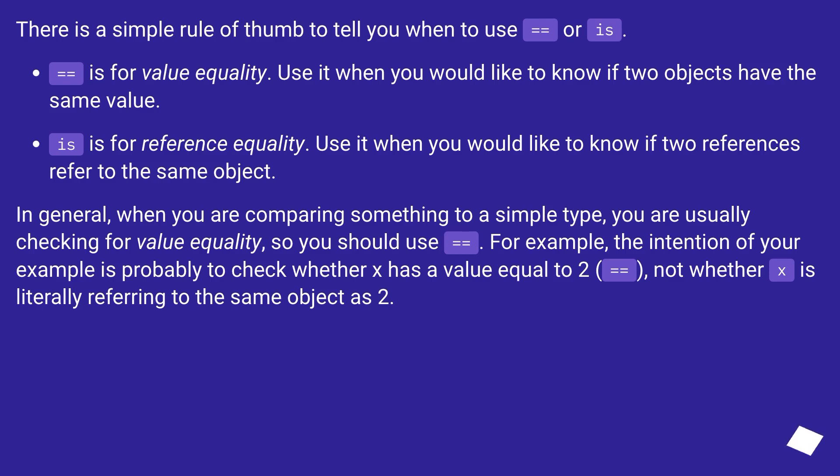In general, when you are comparing something to a simple type, you are usually checking for value equality, so you should use equals equals. For example, the intention of your example is probably to check whether x has a value equal to 2, equals equals, not whether x is literally referring to the same object as 2.